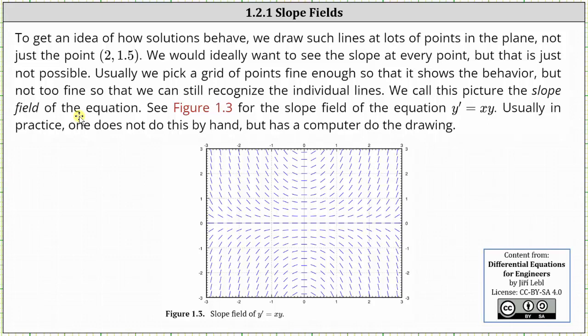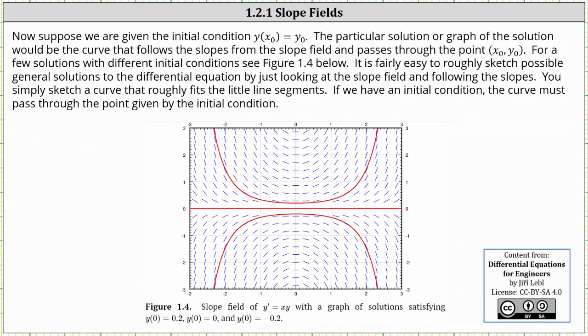Usually in practice, one does not do this by hand, but has a computer do the drawing. We'll take a look at some slope fields using desmos.com in just a moment. Now suppose we are given the initial condition y of x sub 0 equals y sub 0. The particular solution, or the graph of the solution, would be the curve that follows the slopes from the slope field and passes through the point x sub 0 comma y sub 0. For a few solutions with different initial conditions, see figure 1.4 below.